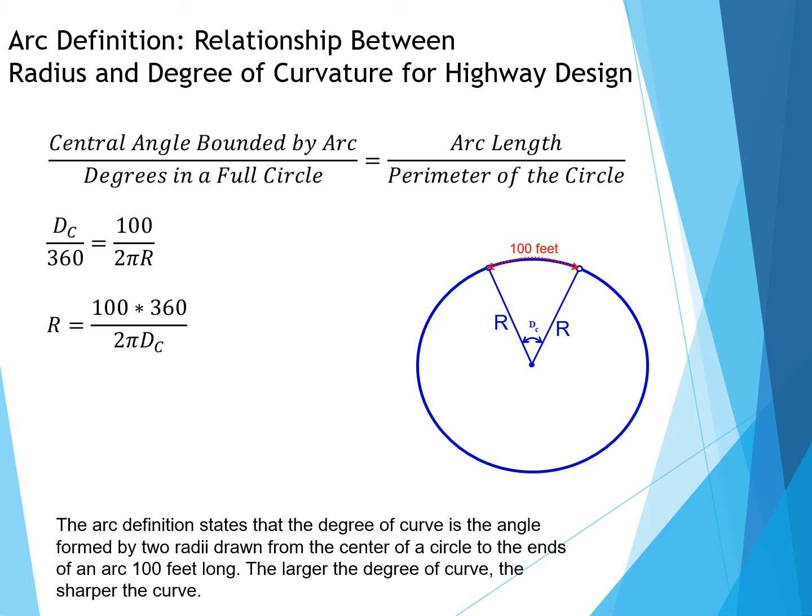We can simplify this, solving for the radius, and that's the common way to see this equation. The radius equals 100 feet times 360 degrees divided by 2 pi times the degree of curve.